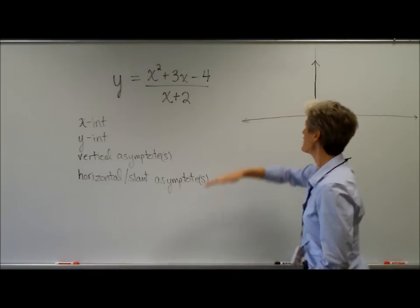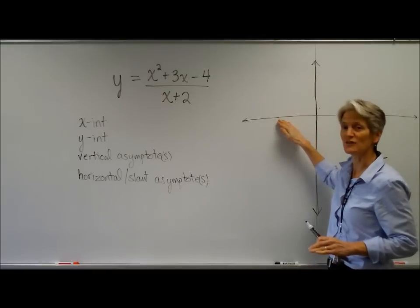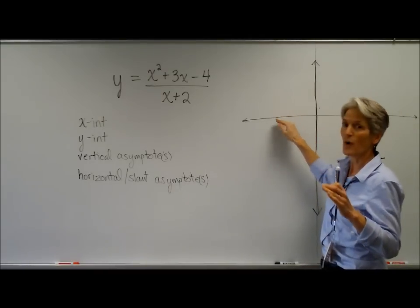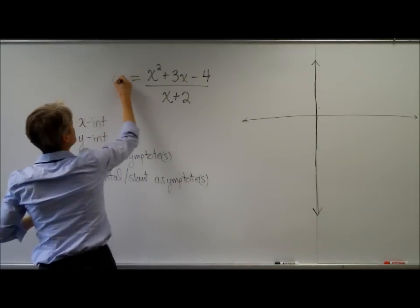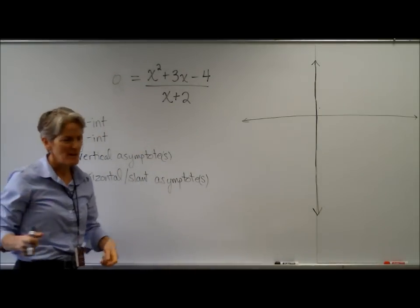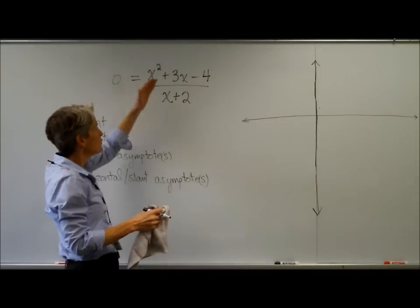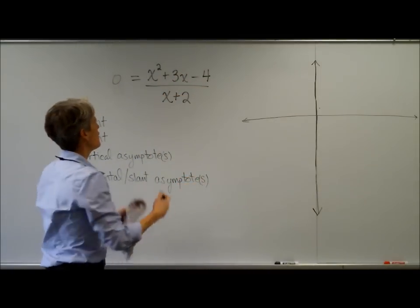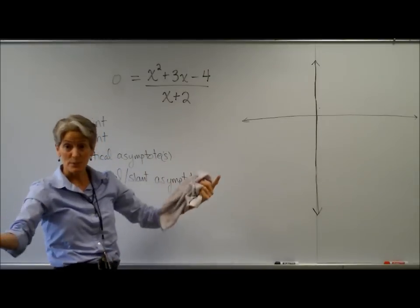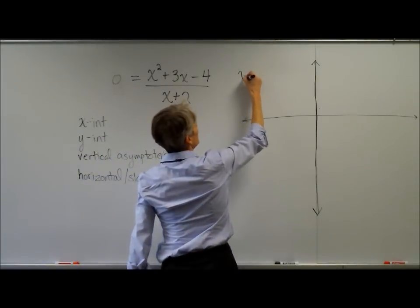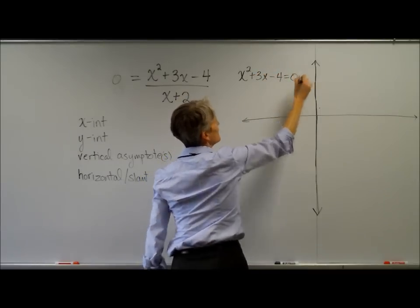X-intercept. Of course, as we know, the x-intercept is where the graph touches the x-axis. So my y-value is 0 there. Can I just temporarily throw in a 0 here? Absolutely. As we've discussed, the only way for a fraction to produce a 0 is for the numerator to produce that 0.